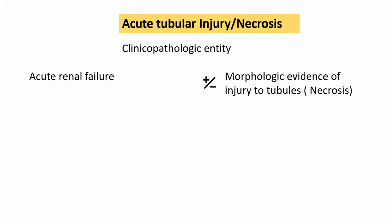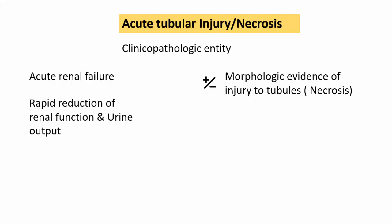How is this acute renal failure identified? The clinical evidence of acute renal failure is by demonstration of rapid reduction of renal function and urine output — for example, there is a decrease in urine output, an increase in blood urea nitrogen, and increase in serum creatinine levels. All these are evidence of acute renal failure. Remember, acute tubular injury is the most common cause of acute kidney injury.